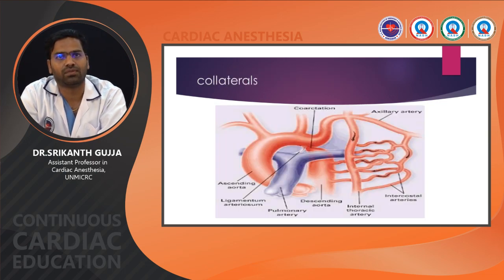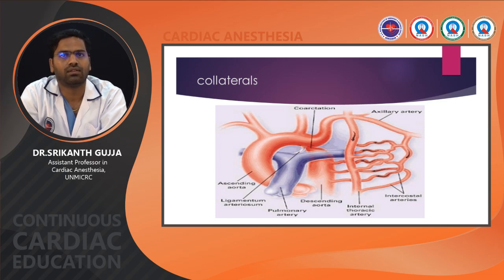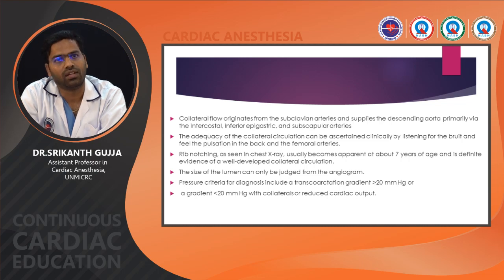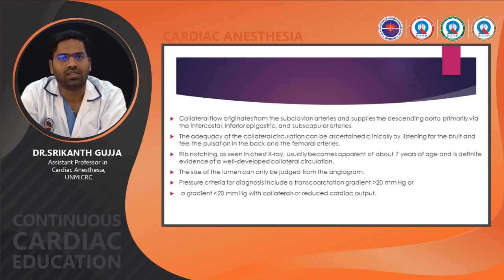Collateral flow originates from the subclavian artery and supplies the descending aorta primarily via intercostal, inferior epigastric, and subscapular arteries. Adequacy of collateral circulation can be assessed clinically by listening for a bruit, feeling pulsations in the back and femoral arteries. Rib notching seen in chest X-ray usually becomes apparent at 7 years of age and is definitive evidence of well-developed collateral circulation. The size of lumen can only be judged from angiogram. Pressure criteria for diagnosis include a transcoarctation gradient more than 20 mmHg.